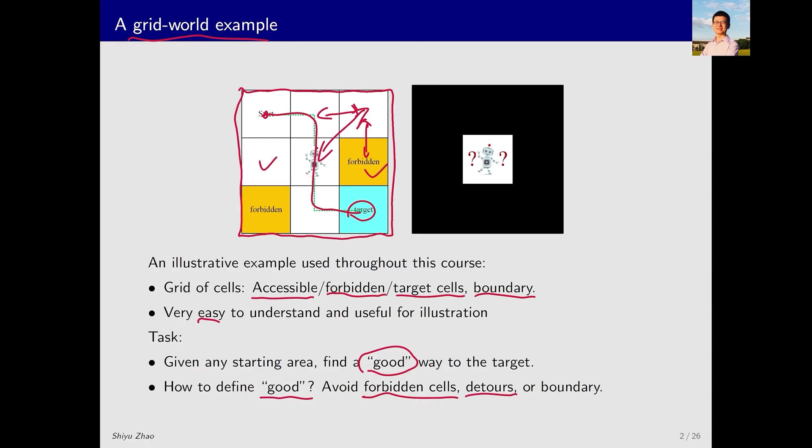Unnecessary detours should be avoided. For example, when the goal is to reach the target area, but instead it goes there, then back and forth wandering around. This should be avoided. Additionally, trying to cross the boundaries like attempting to move upwards or leftwards beyond the grid should also be avoided.